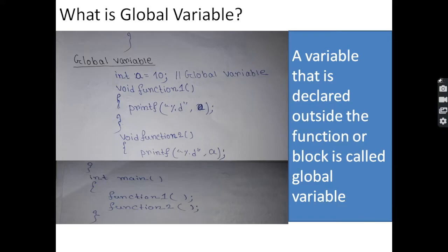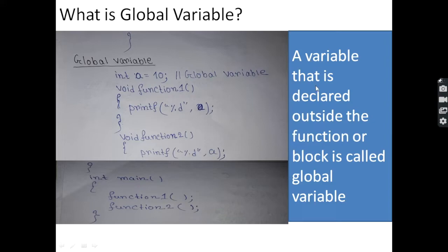Next, we will know what is a global variable in C. A global variable is always declared outside the function — not inside. Here in this code: int a equals to 10, void function1 with printf %d a, void function2 with printf %d a. Function2 is called within the main function. A global variable is always declared at the starting of the program, and it is available to all functions.